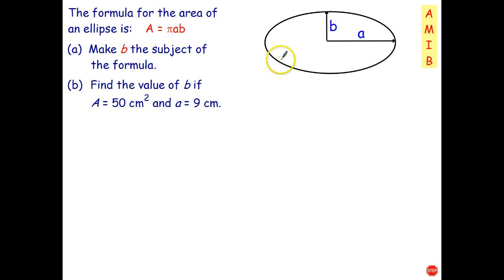So let's have a look at this one just here. So this shape here is called an ellipse. It looks like a circle that's been stretched out horizontally and it turns out the formula for the area of an ellipse is area equals pi AB.